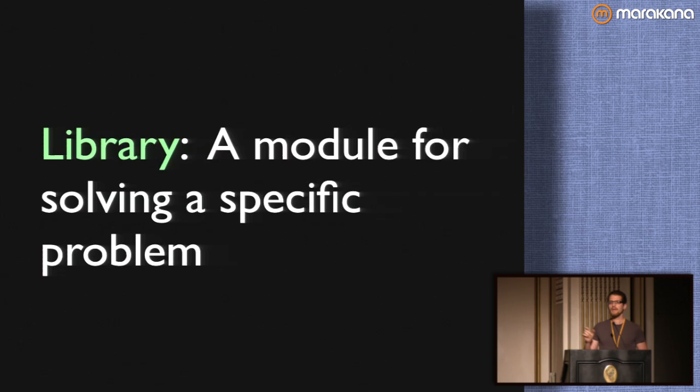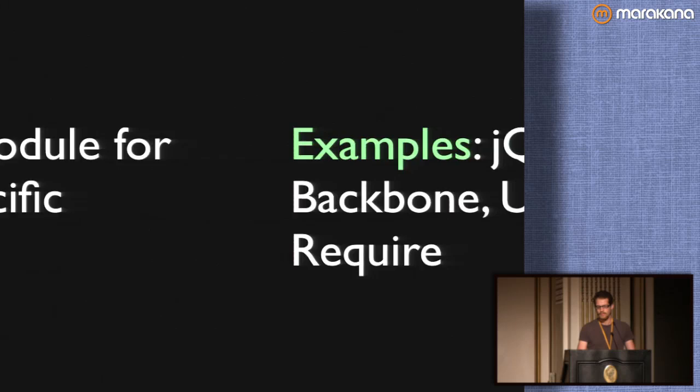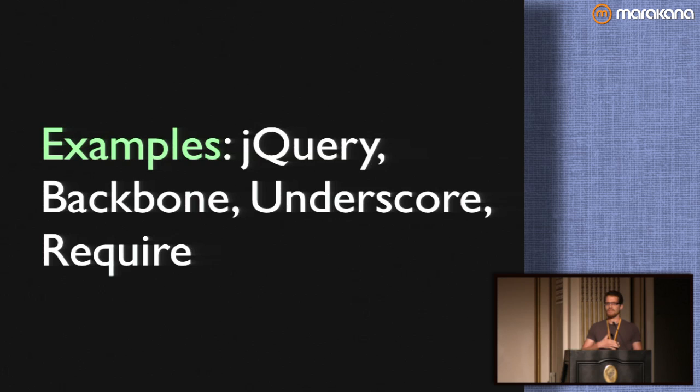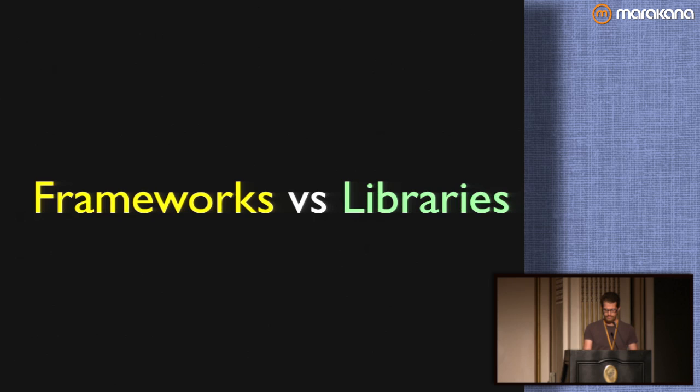A library is a little bit different — it's smaller in scope than a framework. A library is just a module for solving a specific problem. You can think of it as a utility for solving a certain need that you might have. Examples that we know and love are jQuery, Backbone, Require, and Underscore. The list goes on — there's a ton of really great libraries written by the JavaScript community.